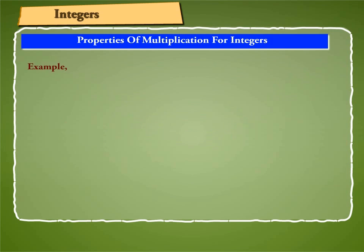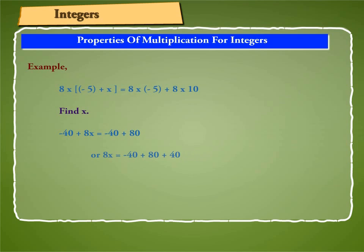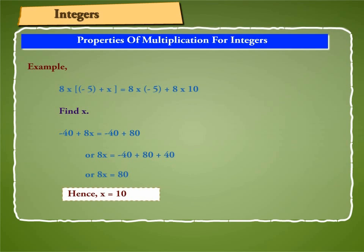Let us solve an example. In 8 into (minus 5 plus X) equals 8 into minus 5 plus 8 into 10, find X. This gives us minus 40 plus 8X equals minus 40 plus 80. This implies 8X equals minus 40 plus 80 plus 40. This gives us 8X equals 80. Hence, X equals 10. Thank you.